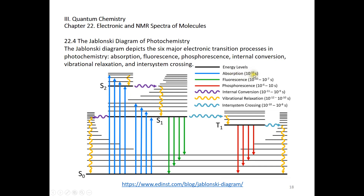Absorption takes place within one or several femtoseconds. Once the electronic state is changed to a higher energy level — for example, the S1 state — it's not going to be very stable. It's possible for the molecule to undergo electronic de-excitation and jump back from S1 back to S0. This is pretty fast as well, usually nanoseconds. It's called fluorescence. In the fluorescence process, a photon is emitted.